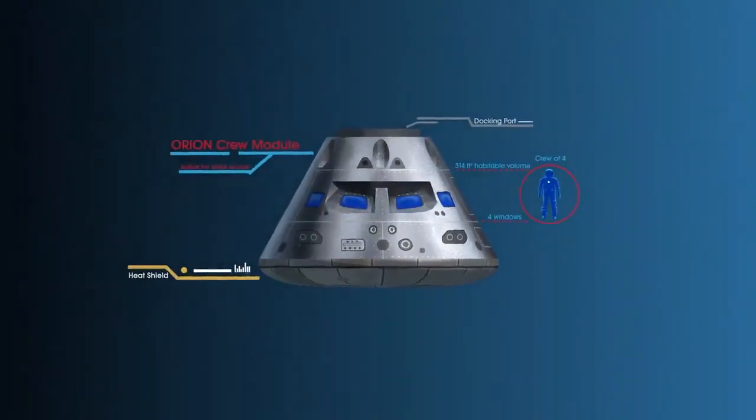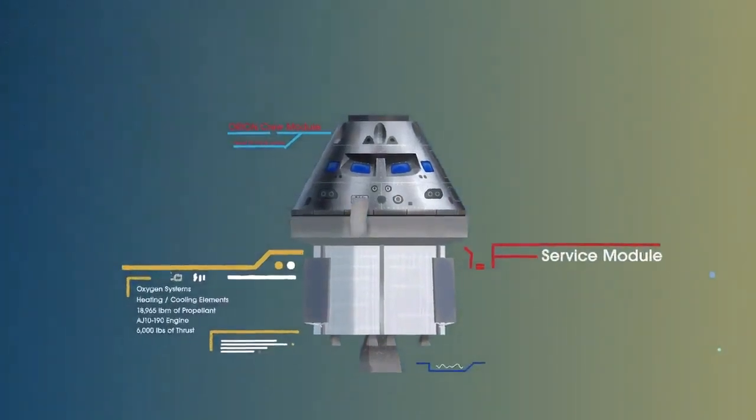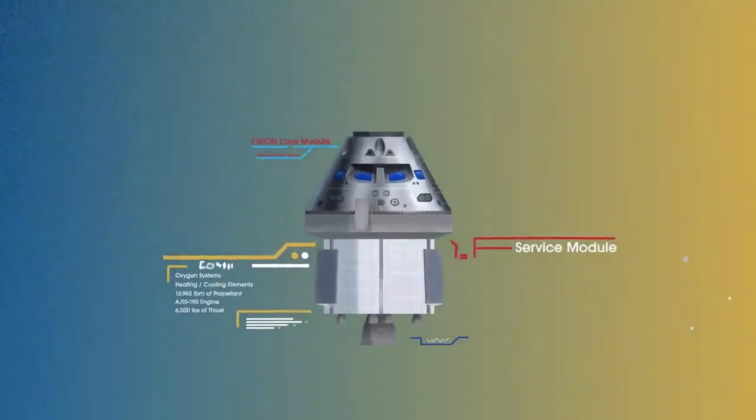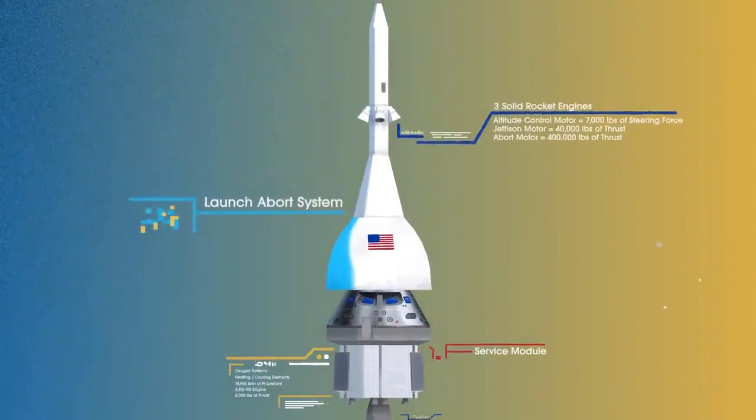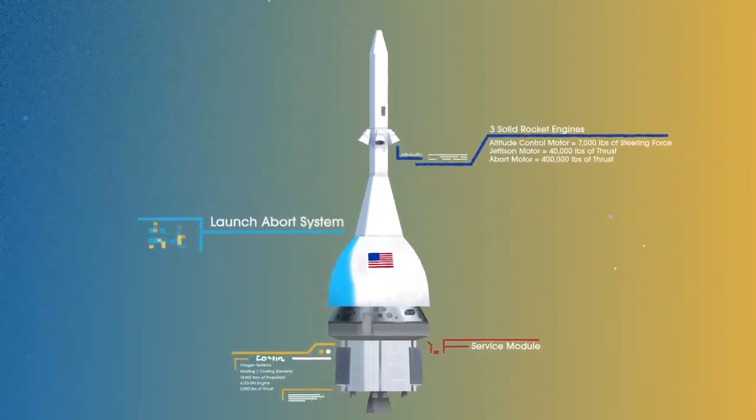The crew module, where up to four astronauts will live and work throughout the flight. The service module, with life-support systems for the crew and its own engine and fuel reserves, and a launch abort system, with engines capable of pulling the crew module to safety during launch should anything go wrong.